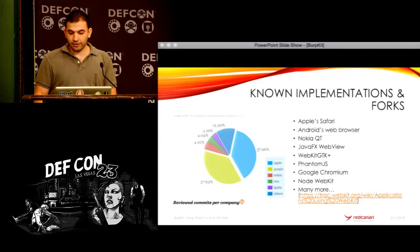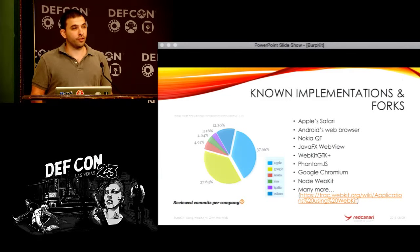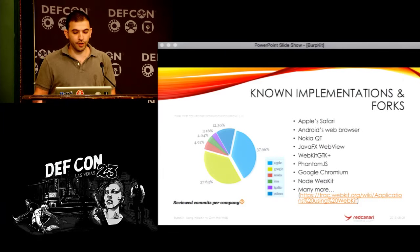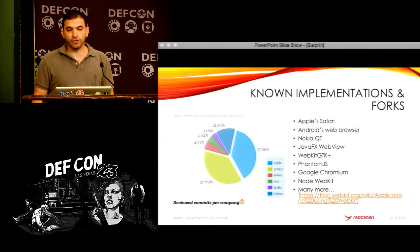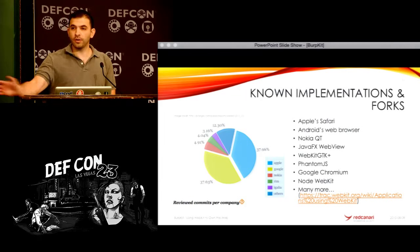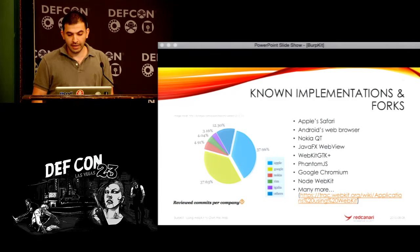Here are a few known implementations and forks of WebKit. We all know Apple Safari, Android, Nokia has an implementation in QT, and JavaFX — just recently after the release of Java 1.8 update 30 — started getting a web view natively bundled with Java. And we have GTK and so on. What's interesting on the graph on the left is that the two major companies driving the project are still Apple and Google, even though Google has completely forked away from WebKit. They now have Google Chrome, but they're still major contributors to the project.